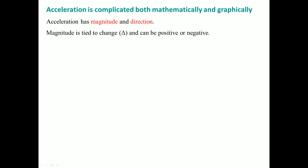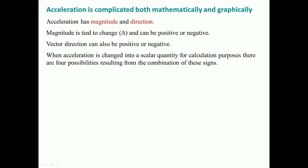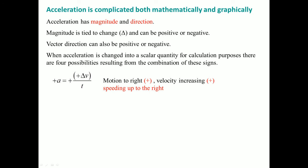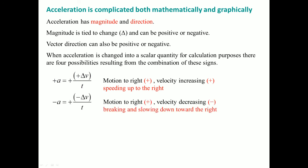Acceleration has both magnitude and direction, so we look at four possibilities. If moving to the right with positive velocity and positive acceleration, the car is speeding up. But if moving to the right and velocity is decreasing — imagine braking — you're slowing down because acceleration is in the opposite direction.